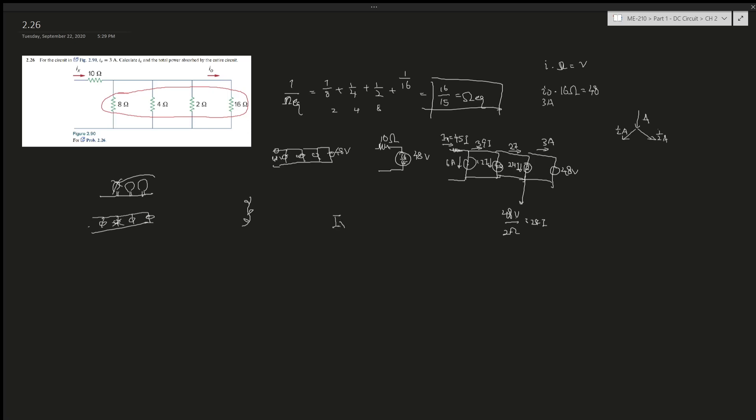Now we found ix, it's 45 amps. Now we have to calculate the total power absorbed by the entire circuit. What is power? Power is V times I, because V is joules per coulomb and I is coulombs per second. Cancels out, gives you joules per second, which is power—watts, or BTU, or a bunch of other units.